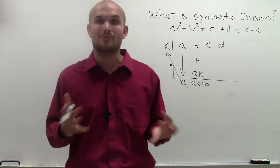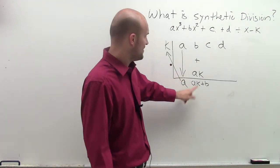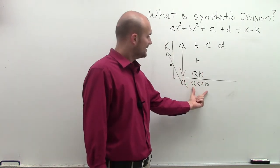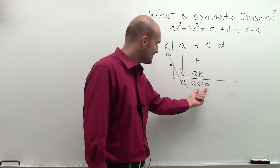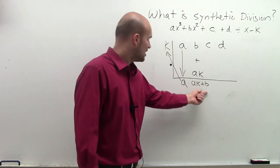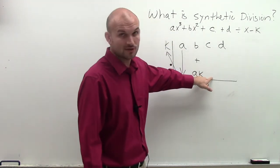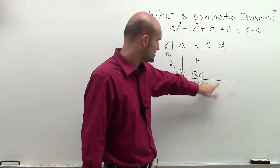And I think this will make a little bit more sense exactly when I get into doing some problems. But just notice when you're going to be multiplying your diagonals. So then the next thing I do is this value, whatever b plus ak is, I'm going to take that sum and then multiply it by k. Whatever that product is, I put it now below c. Then c plus that product equals my new sum.